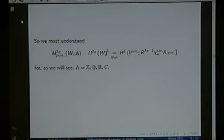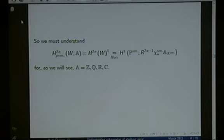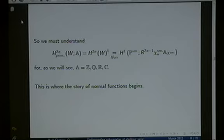We must understand that part of the cohomology. A theorem of Nori says that there is in fact an isomorphism between the cohomology over the base and this piece of the cohomology. What follows will work with all possible coefficients — Z, Q, R, and C — but when we do cohomology with integral coefficients it will always be modulo torsion.